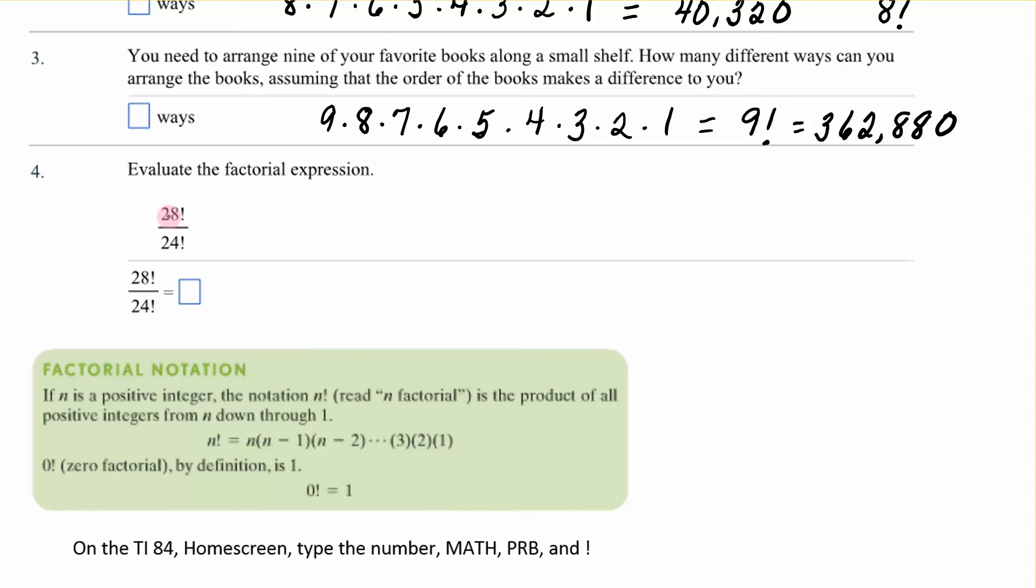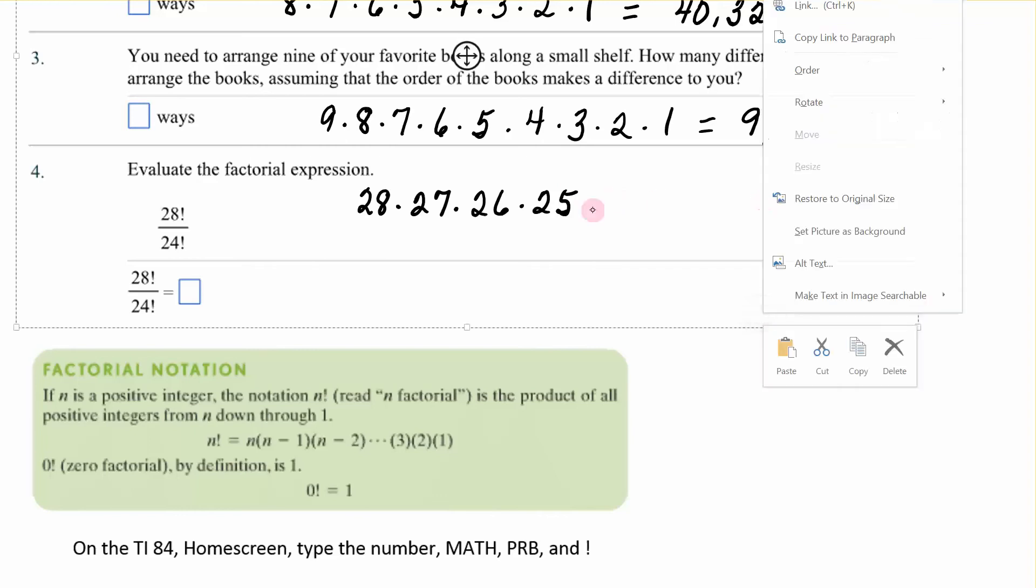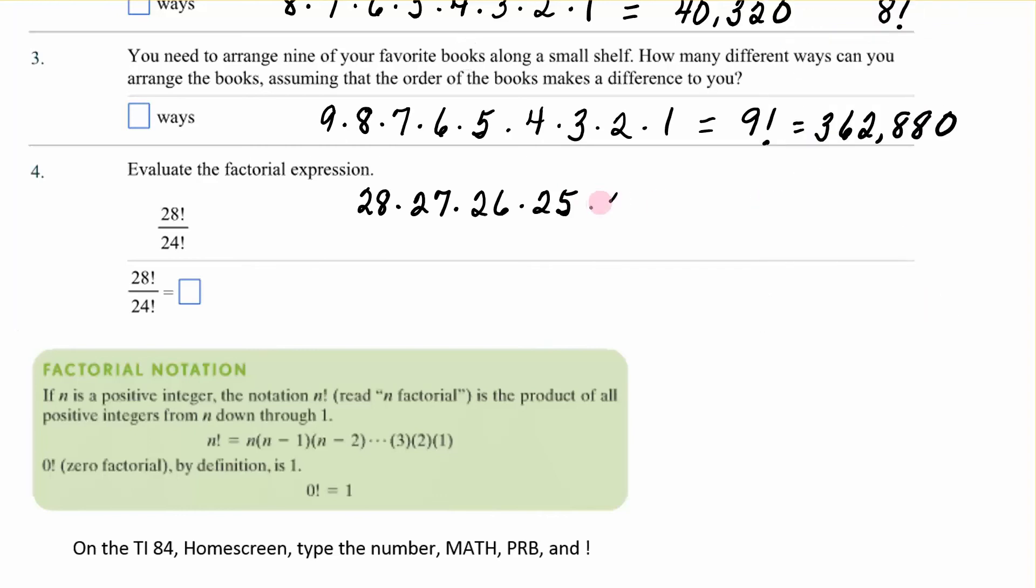All right, 28 factorial divided by 24 factorial. Well, 28 factorial is such a huge number, this is what they say. If you've got two factorials, go to the big one and say that's 28 times 27 times 26 times 25 times, now, it's going to be 24 and on. So you could stop and say times 24 factorial.